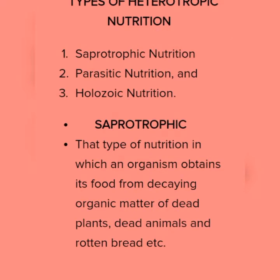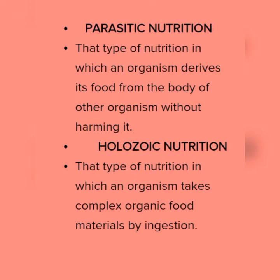Heterotrophic nutrition is further divided into three types: saprotrophic nutrition, parasitic nutrition, and holozoic nutrition. In saprotrophic nutrition, the organism obtains its food from decaying or dead organic matter. For example, mushrooms often grow on dead organic matter, so mushrooms exhibit saprotrophic nutrition.